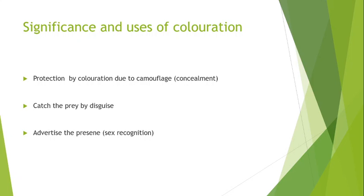The fish is able to catch the prey by disguise and the prey is not able to identify the predator due to the different type of coloration according to the background. Then coloration is also important in sex recognition, and the fish uses its colors to advertise its presence. So these are some points on the basis of which we can understand the coloration in fishes.